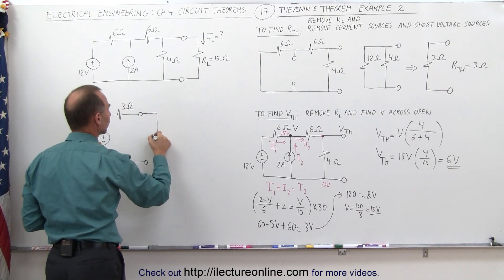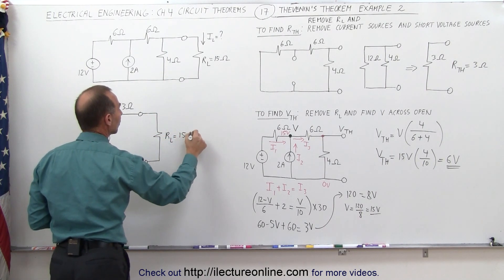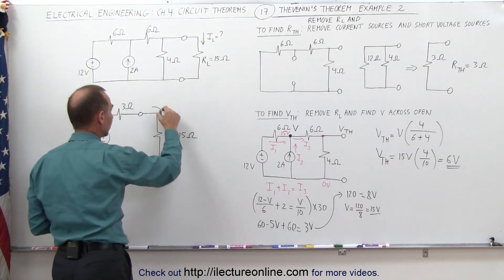We can now attach the load resistor to that R sub L, which is equal to 15 ohms. And now we can find the current to the circuit.